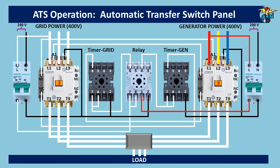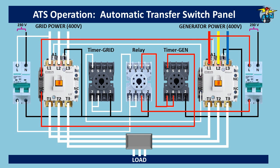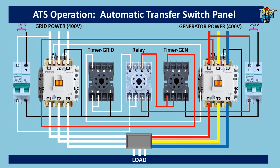Relay output port 4 is at normally closed position and allows power from port 1 of the relay to flow to ports 7 and 8 of the generator timer. Although the relay is powerless, the generator timer is powered. After the set delay time, port 6 also gets power, allowing connection to A1 of the generator contactor. This connection also goes through the normally closed auxiliary contact of the grid power contactor to make sure it is at OFF position. The generator contactor turns ON and the load gets three-phase power through the generator.